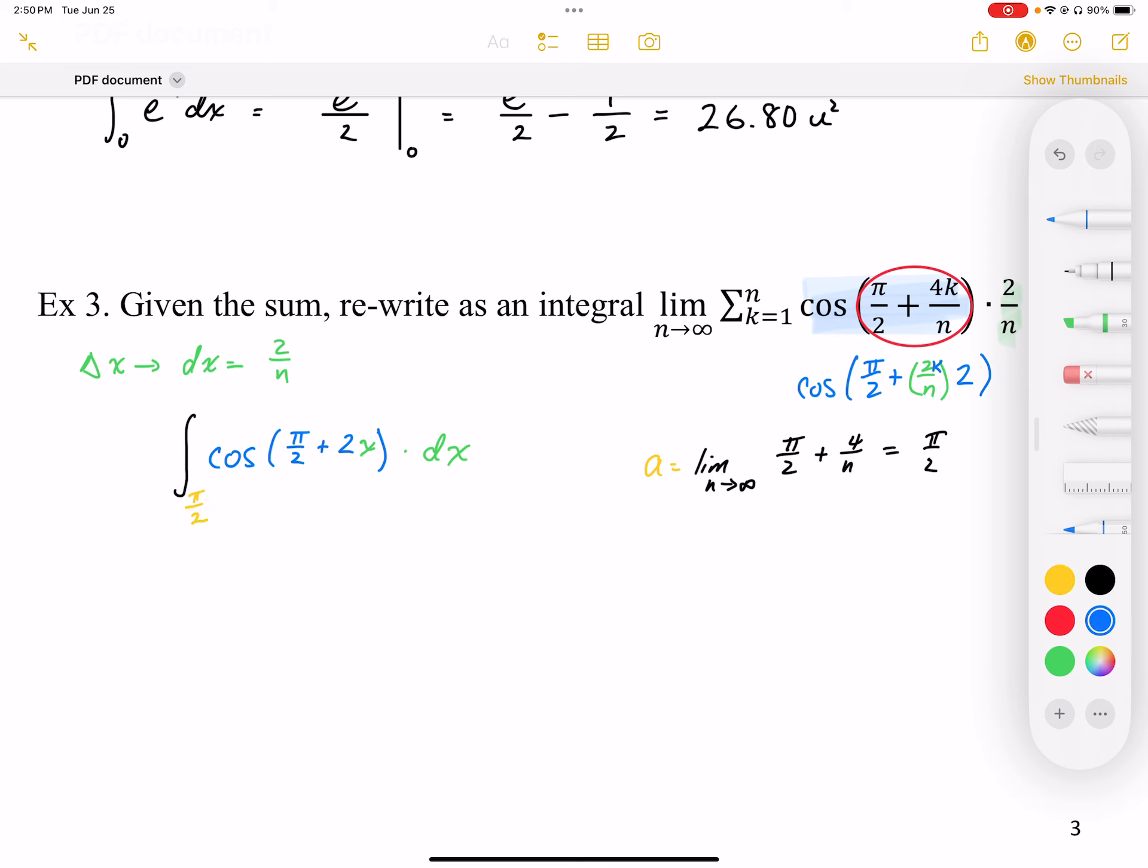My upper bound, which I'll call b, is going to be the limit of this expression when k equals infinity. So I get pi over 2 plus 4 times—this is basically k is infinity over n. These are linear terms of infinity, so when we simplify this,